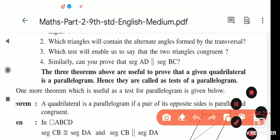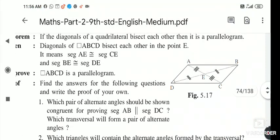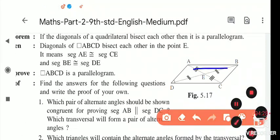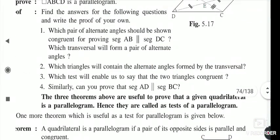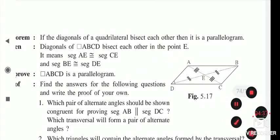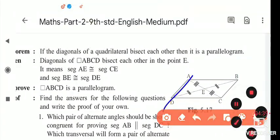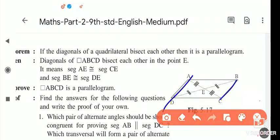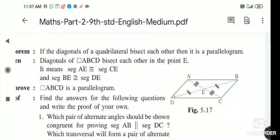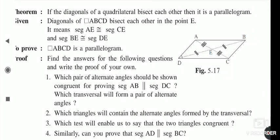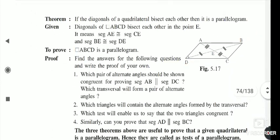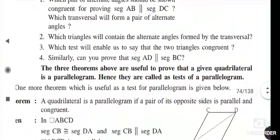Next question: which setup enables us to show two triangles congruent? We take triangles ABE and EDC. Similarly we can prove that AD and BC are parallel to each other. If opposite sides are parallel, the figure is a parallelogram — that is how we prove it.